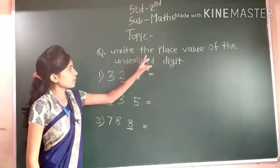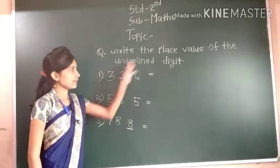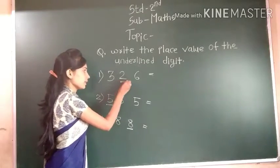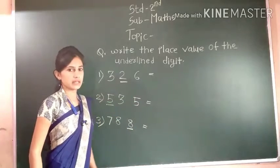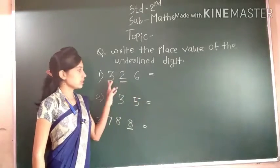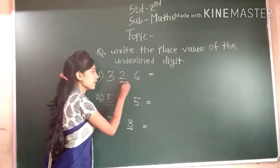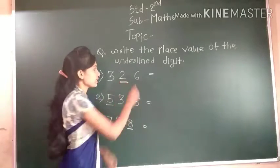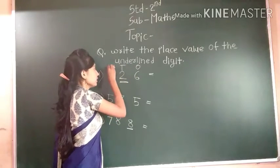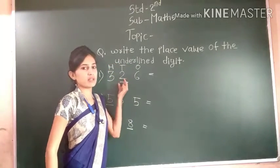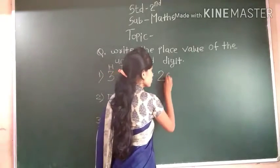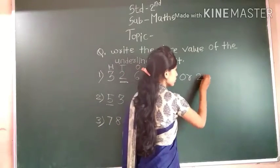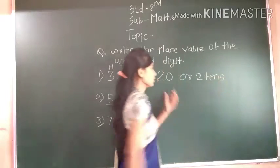Students, see here — write the place value of the underlined digit. Which number is the underlined digit? The place value of the underlined digit: 2 tens defines 20. The place value of 2 tens is 20, or 2 tens.